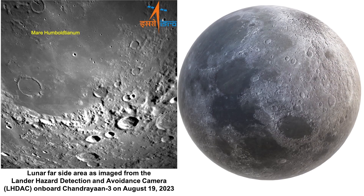The first one is Mare Humboldtianum, often referred to as the Sea of Alexander von Humboldt. This lunar mare is nestled just to the east of Mare Frigoris, which is another dark flat area on the moon's surface. The term Mare is Latin for Sea, although these areas are actually not bodies of water.